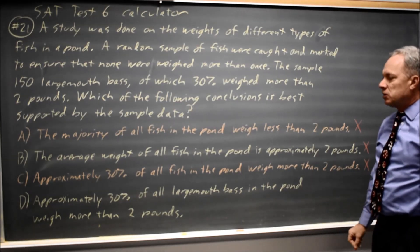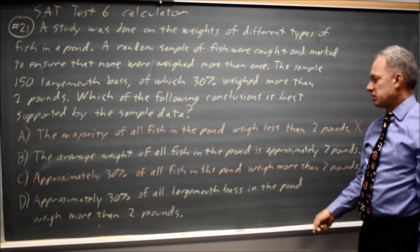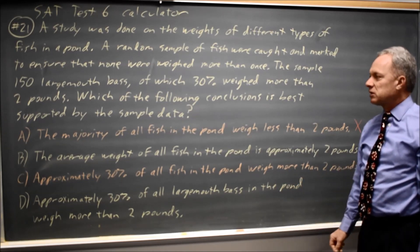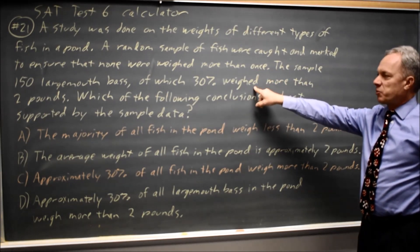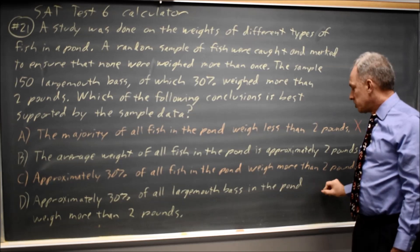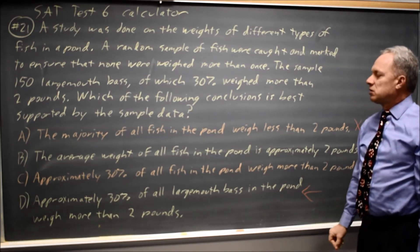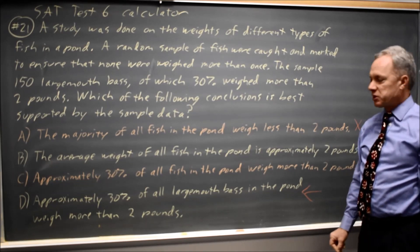Choice D. Approximately 30% of all largemouth bass in the pond weigh more than 2 pounds. Since the sample largemouth bass approximately 30% weighed more than 2 pounds, this is a reasonable conclusion. So choice D is the best supported choice given the sample data.